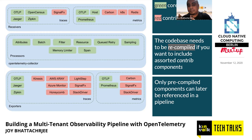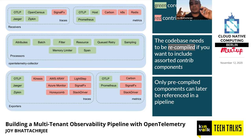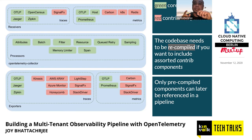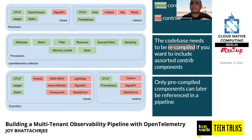One important point: the binaries for the contrib repo and the core repo are not the same. If you want to use features or exporters and receivers marked in red, you'll have to use the Docker image or compiled code from the contrib repo, which is a superset of the core repo — it has the core components plus extra components from vendors. If you use the core repo's Docker image in your deployment, you'll miss out on the contrib components. This was a tricky thing for me when I started building because I was expecting more of a plugin system.